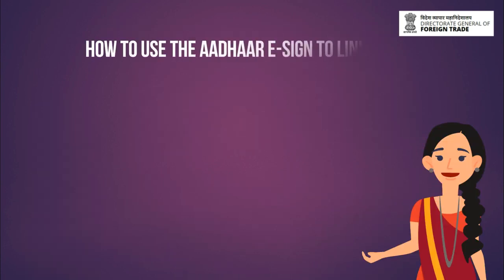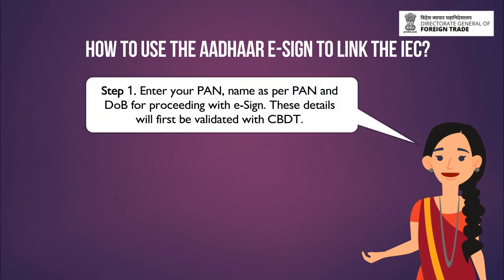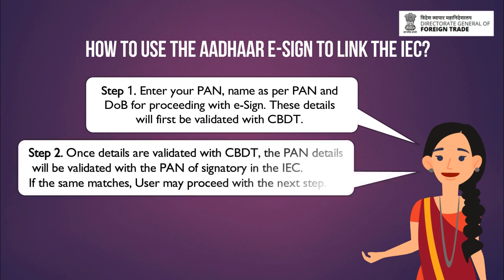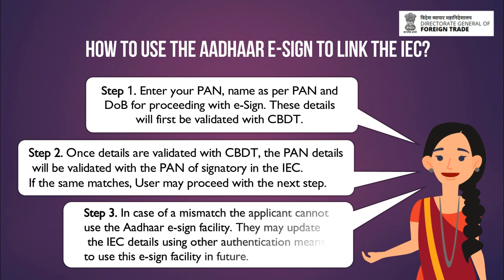How to use Aadhaar eSign to link the IEC? Enter your PAN, name as per PAN, and date of birth for proceeding with eSign. These details will first be validated with CBDT. Once details are validated with CBDT, the PAN details will be validated with the PAN of the signatory in the IEC. If the same matches, the user may proceed with the next step. In case of a mismatch, the applicant cannot use the Aadhaar eSign facility. They may update the IEC details using other authentication means to use this eSign facility in future.